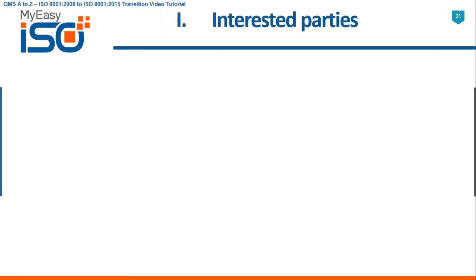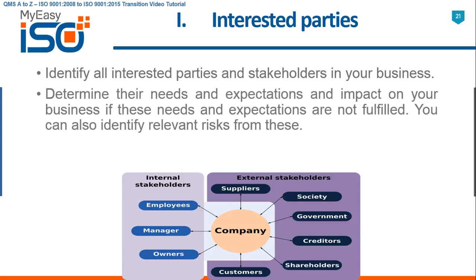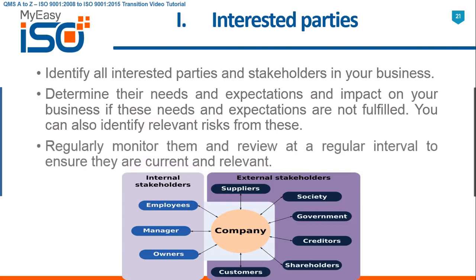I — Interested Parties. Identify all interested parties and stakeholders in your business. Determine their needs and expectations and the impact on your business if these needs and expectations are not fulfilled. You can also identify relevant risks from these. Regularly monitor them and review at a regular interval to ensure they are current and relevant.